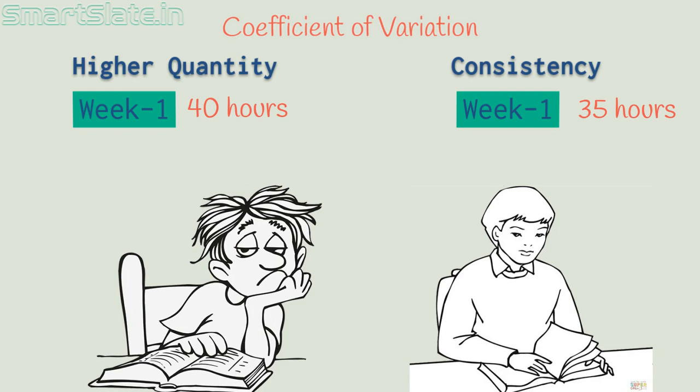If you take a sample of another week you observe your first friend has not studied at all but your second friend had maintained the same routine and studied for 35 hours. This is consistency.